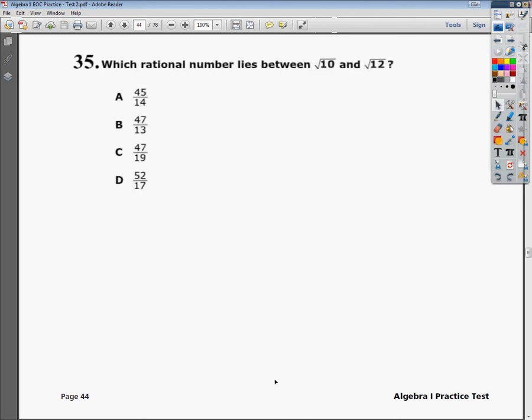Alright, this is the Algebra 1 practice test 2 EOC question number 35. The question asks us which rational number lies between the square root of 10 and the square root of 12.